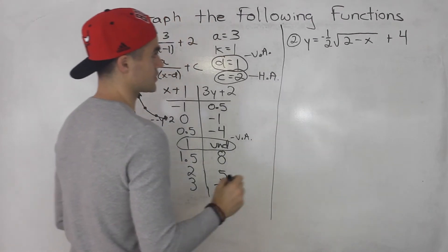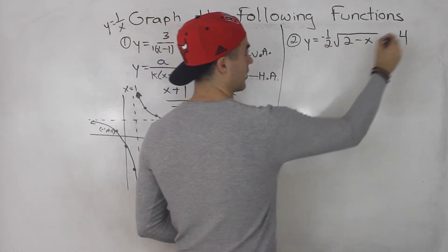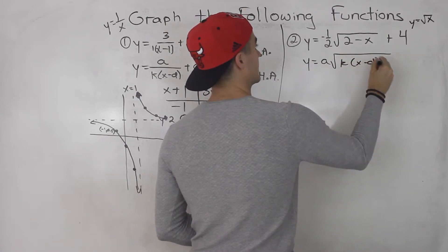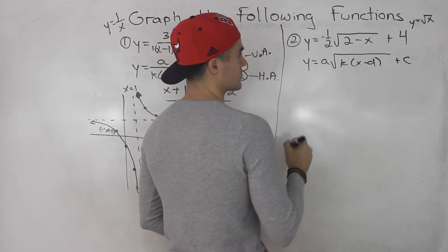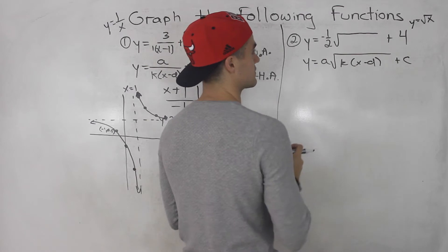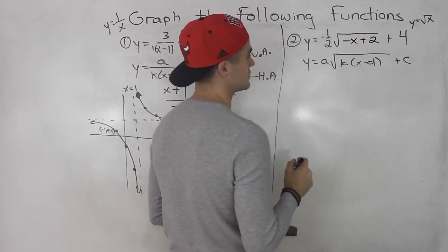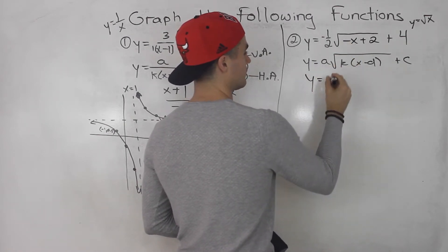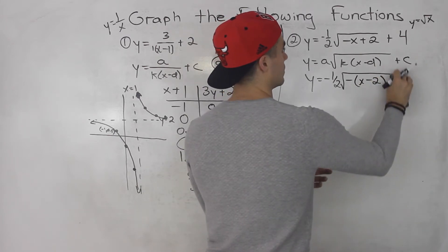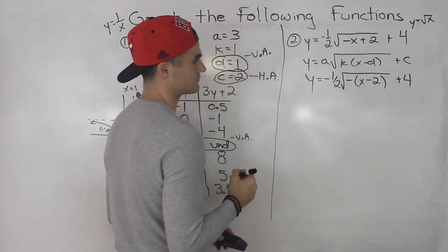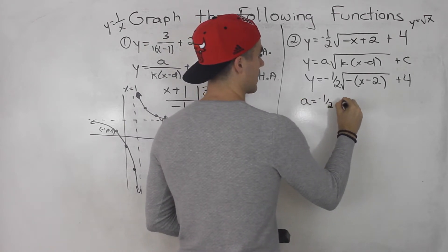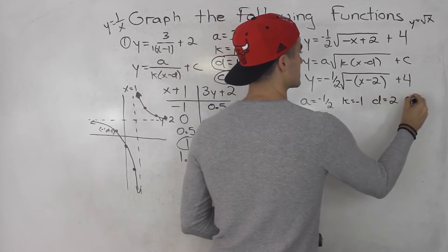Moving on to the second function. Notice the parent function here is root x. When we transform root x, it follows a standard form. We need to rearrange this function — 2 minus x can be rewritten as negative x plus 2, which becomes negative bracket (x minus 2). So the function becomes negative one-half times root of negative(x minus 2) plus 4. Now the transformation values are clear: a = negative one-half, k = negative 1, d = 2, and c = 4.